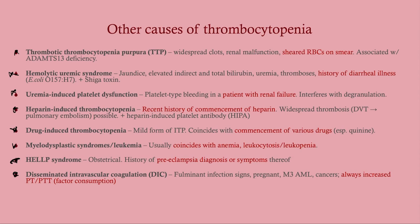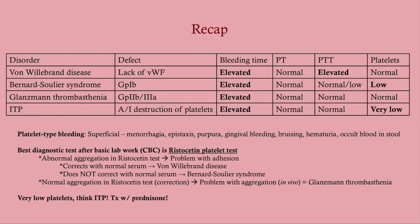As a recap: when you see platelet-type bleeding, first determine whether there is thrombocytopenia via CBC. If not, it is a qualitative platelet defect — get a ristocetin cofactor assay to differentiate. Know that Von Willebrand's disease is by far the most common qualitative platelet defect. If the patient has very low platelets, think ITP, and remember to treat it with prednisone.